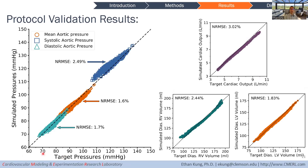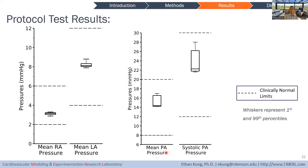We were quite pleased with the results. In these plots, the x-axis shows the target parameters and the y-axis shows the simulated parameters. Aortic pressure — systolic, mean, and diastolic — very close. Cardiac output also very good. End-diastolic right and left ventricular volumes matched accurately. Right atrial pressure, left atrial pressure, pulmonary artery mean and systolic pressure — all these fall within clinically normal ranges.